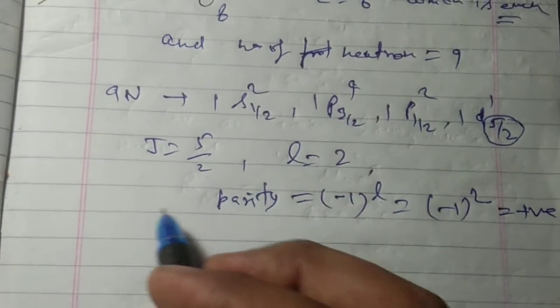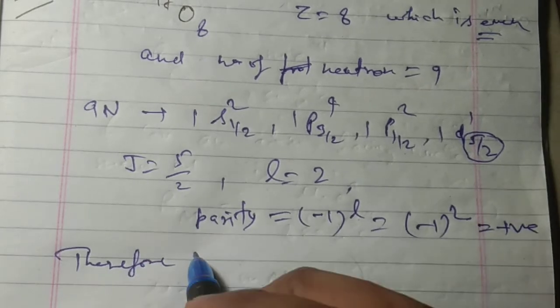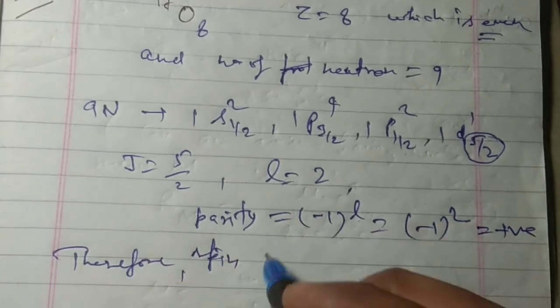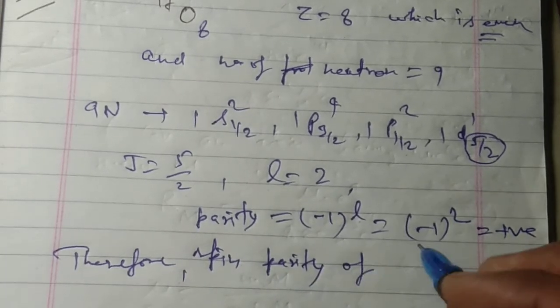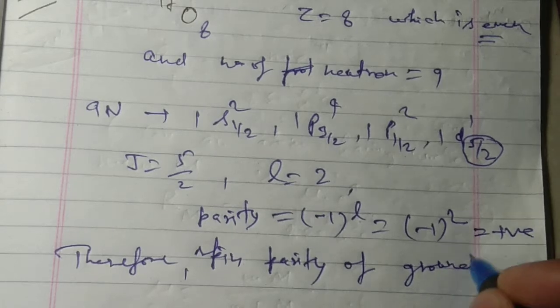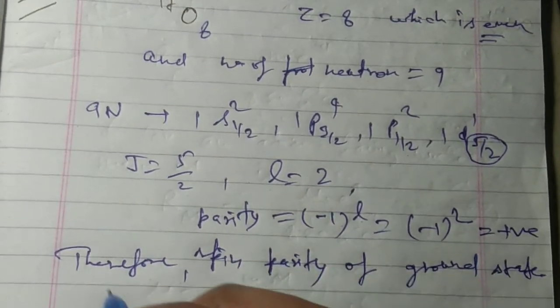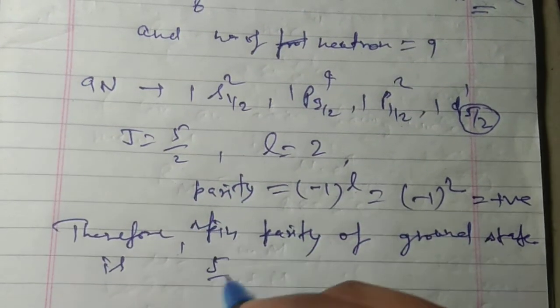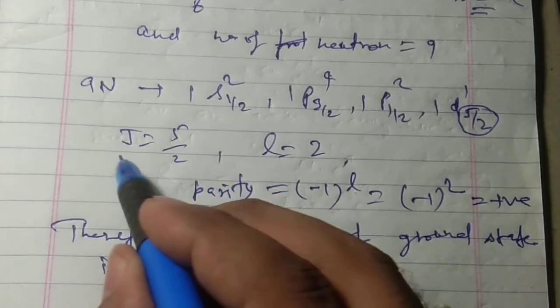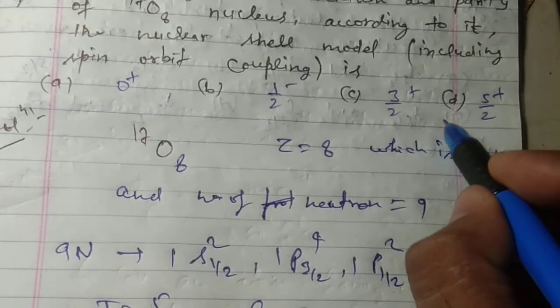Therefore, the spin parity of the ground state is 5/2+.